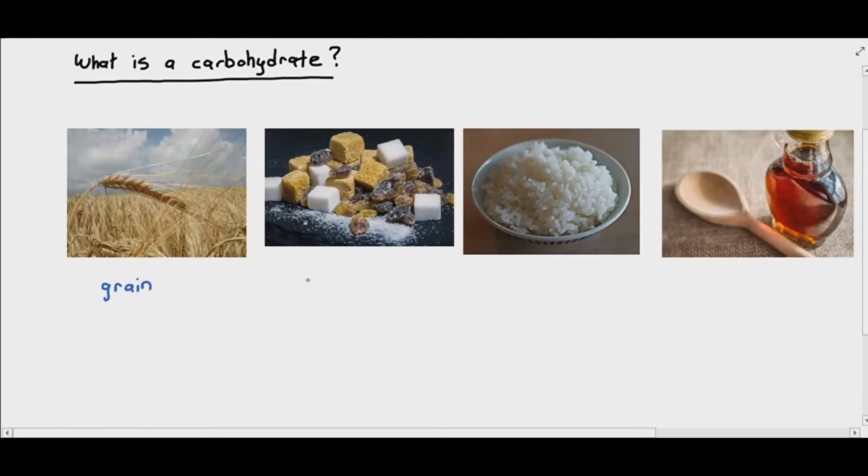So the word carbohydrate itself is used quite often, but how do we define what exactly is a carbohydrate? Because here's the thing. We have so many different types of carbohydrates. If I say the word carbohydrate, you might think of grain. Some students may think of sugars. Some people may think of rice or noodles. Some people may think of maple syrup, which is also another type of carbohydrate as well.